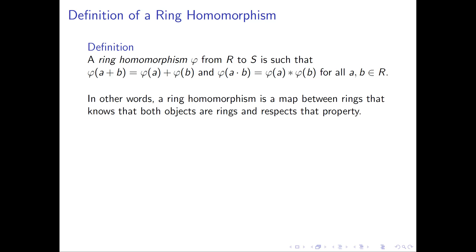We've got to be a group homomorphism, we have to respect the group structure of each of the rings. But now the new thing about being a ring is that we have this multiplication, and we want the map to respect this as well. In summary, in other words, a ring homomorphism is a map between rings that knows that both objects are rings and is really trying to respect and capture that property.